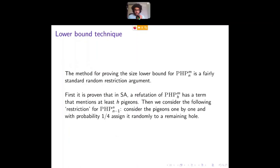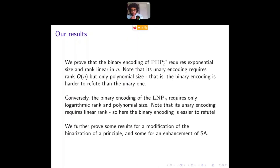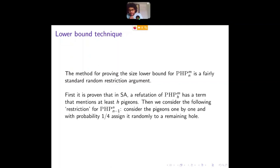So I'll indicate quickly how we get a size lower bound for the pigeonhole principle. It's a random restriction. So first of all, we give a sort of rank lower bound. We say that if you have pigeonhole principle from m pigeons to h holes, there has to be a set there that's used that has at least h pigeons, as many pigeons as holes involved in it. And then the restriction we consider is we go for the pigeons one by one. And with probability of four, we send that pigeon to a hole and then reduce the size of the pigeonhole principle by getting rid of a pigeon in a hole this way.